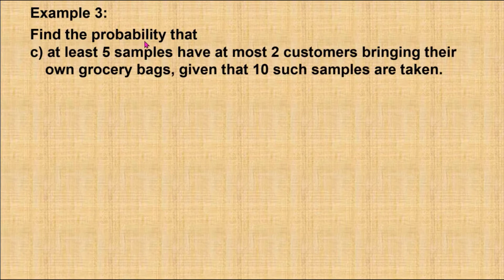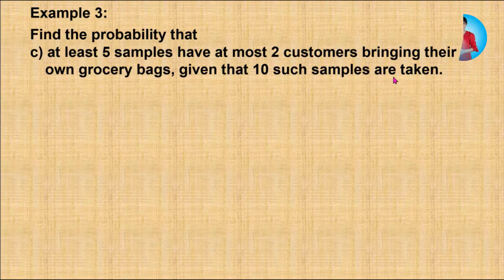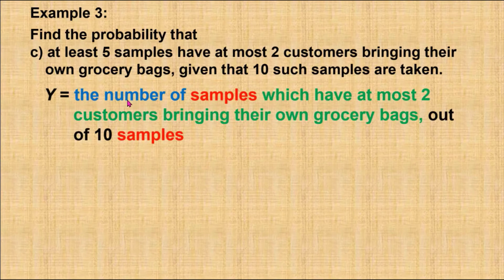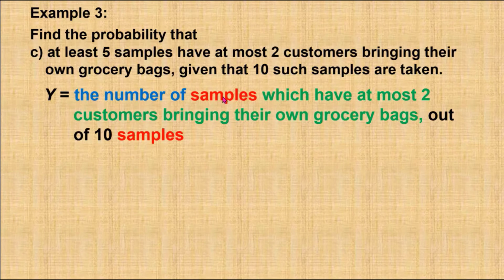Question C: Find the probability that at least 5 samples have at most 2 customers bringing their own grocery bags, given that 10 such samples are taken. The variable can be defined as the number of samples, where the observation is samples. Since the observation is different from variable X, we are going to use a different letter.